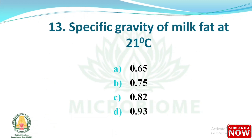Question: What is the specific gravity of milk fat at 21 degrees Celsius? The right answer is option D - 0.93.